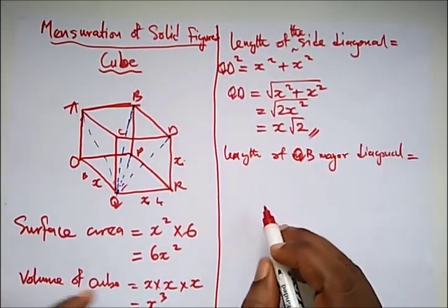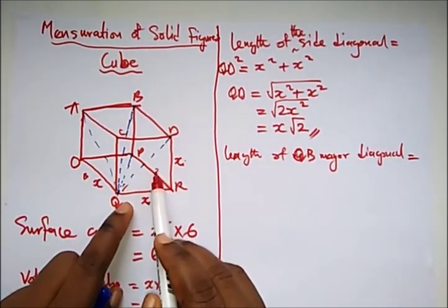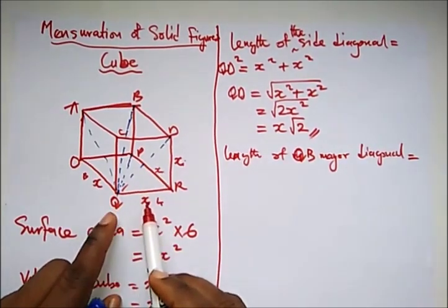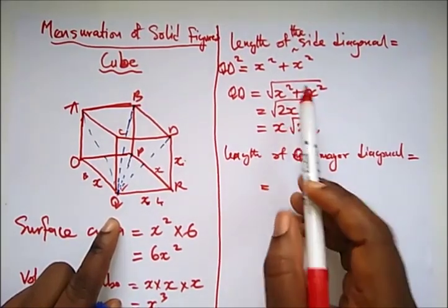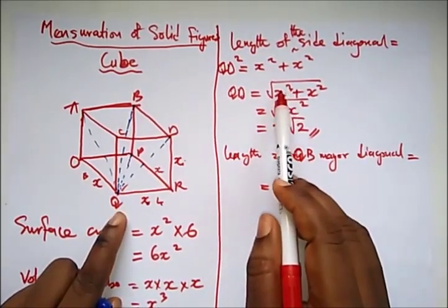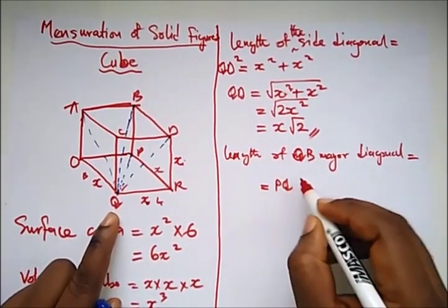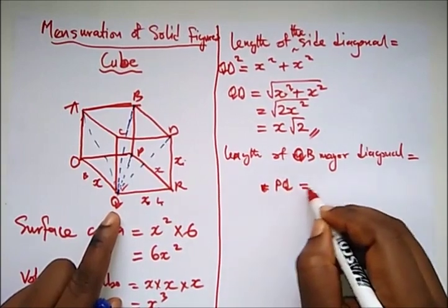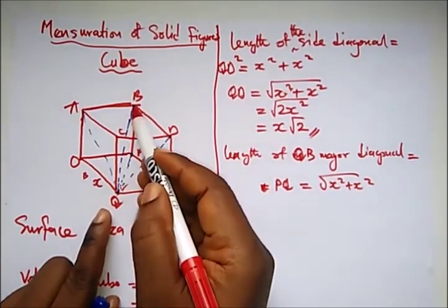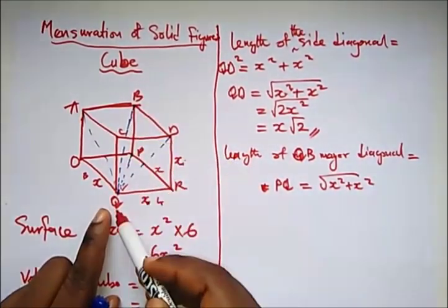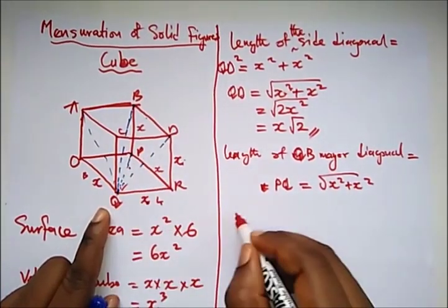So how do we get this? It's also simple too. Since we know this as also x, using Pythagoras rule, we'll get this. In getting this, you know, remember it is equal to this, that's QP. QP is equal to what? x² plus x². And we have to get what? QB. And QB will be this QS² plus this QP, right?